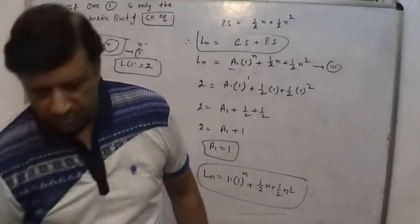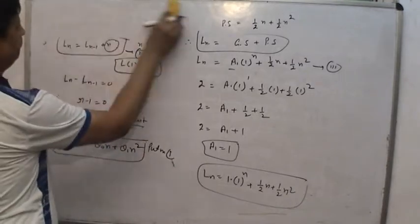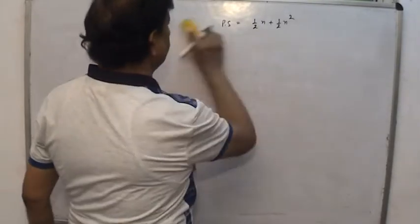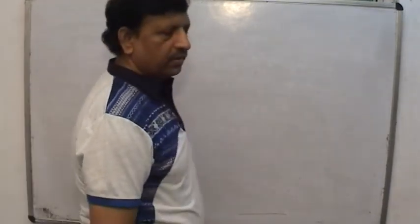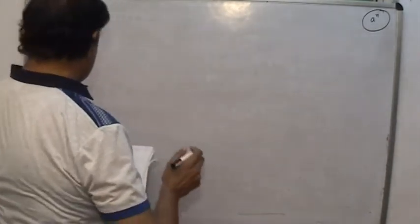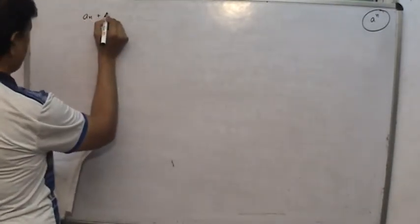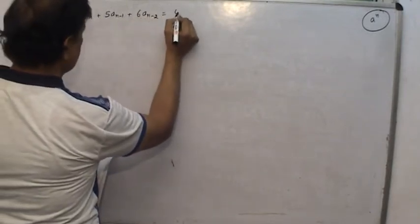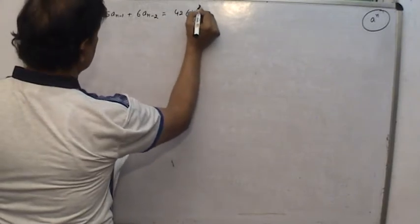Let us see further examples on recurrence relations which contain terms in the form a raised to the power n. They follow different theorems. Let us see an example: find the general solution of aₙ plus 5 times aₙ₋₁ plus 6 times aₙ₋₂ is equal to 40 into 4 raised to the power n.